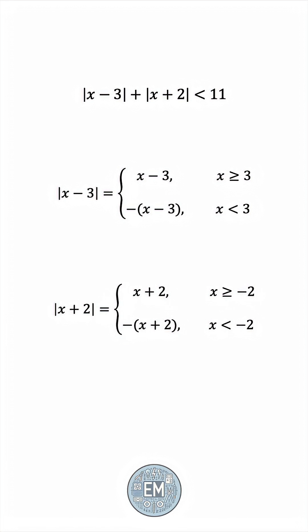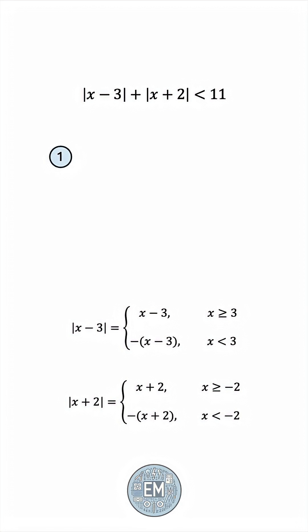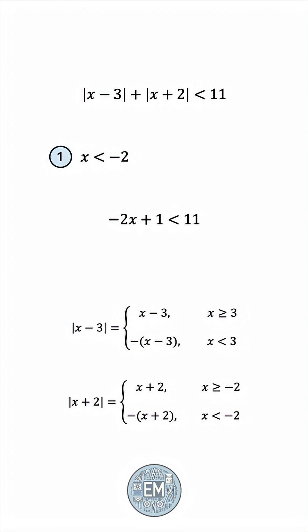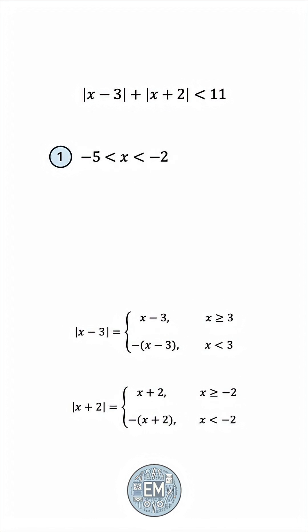So this means we should consider three separate cases. The first case is when x is less than negative 2. Both quantities would be negative, and so we would get negative x plus 3 minus x minus 2. We'll simplify, collect like terms, and we get negative 2x is less than 10, or x is greater than negative 5. Greater than negative 5 and less than negative 2 means x must lie between negative 5 and negative 2. So that's the first possibility.